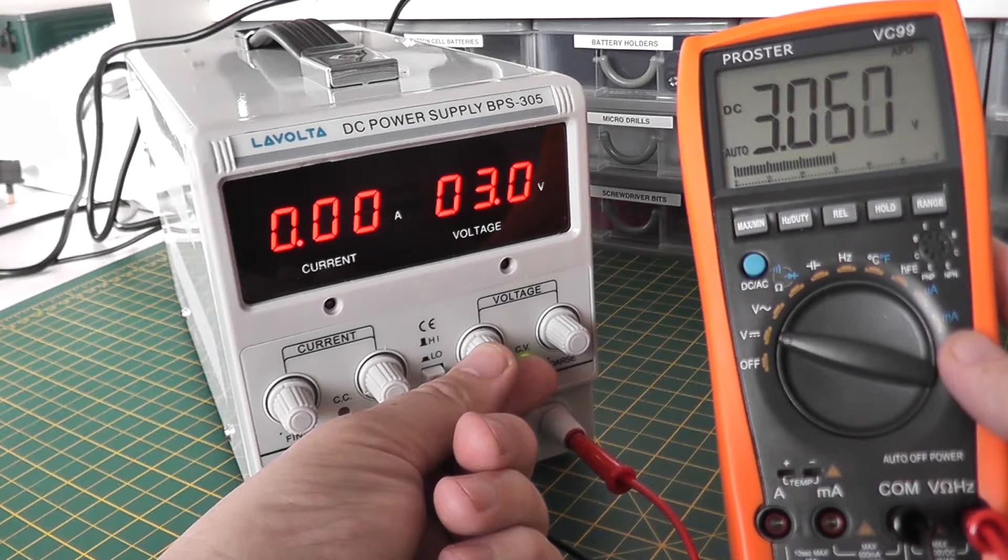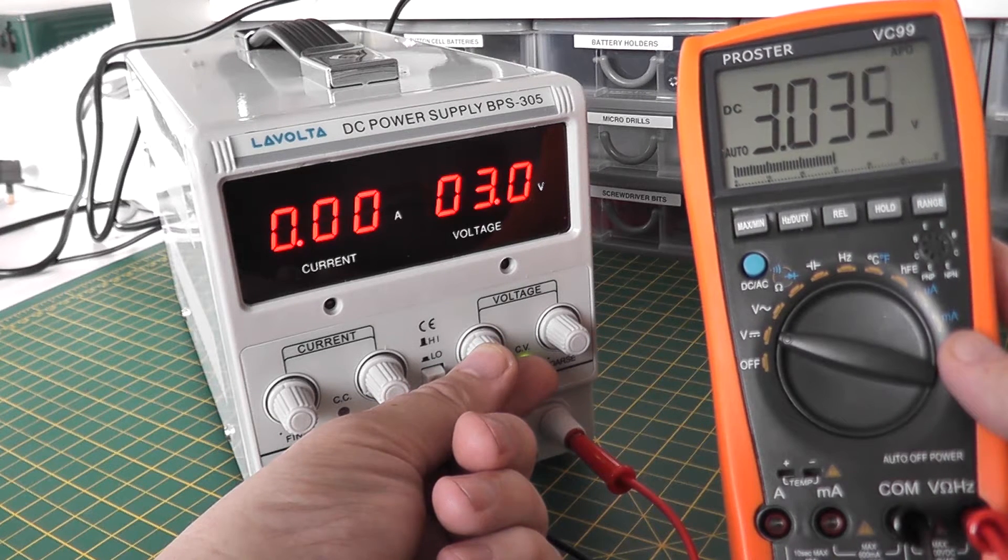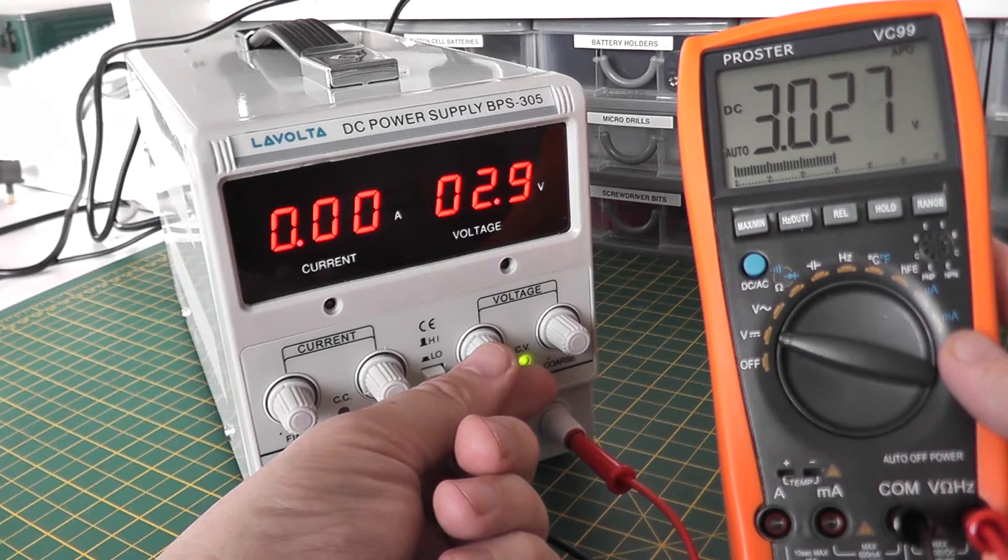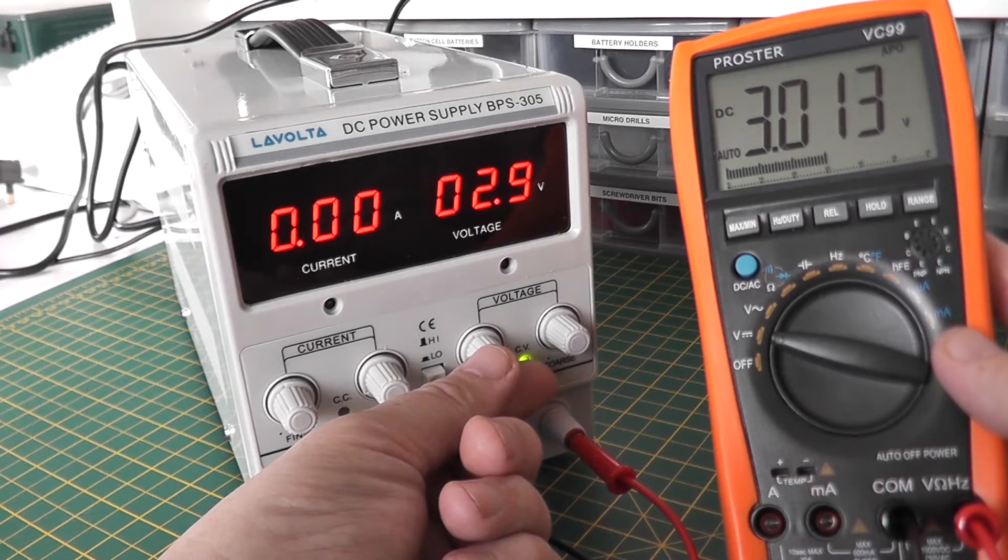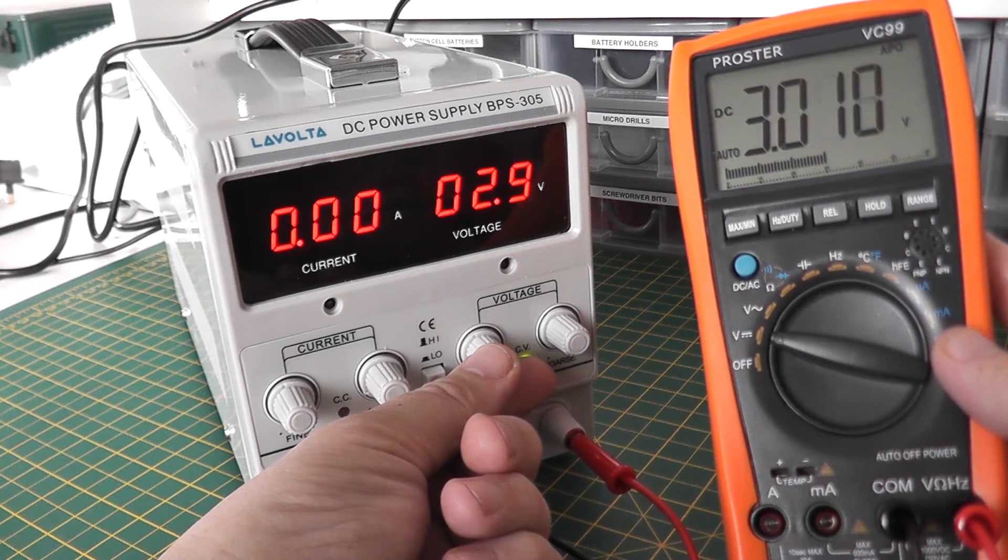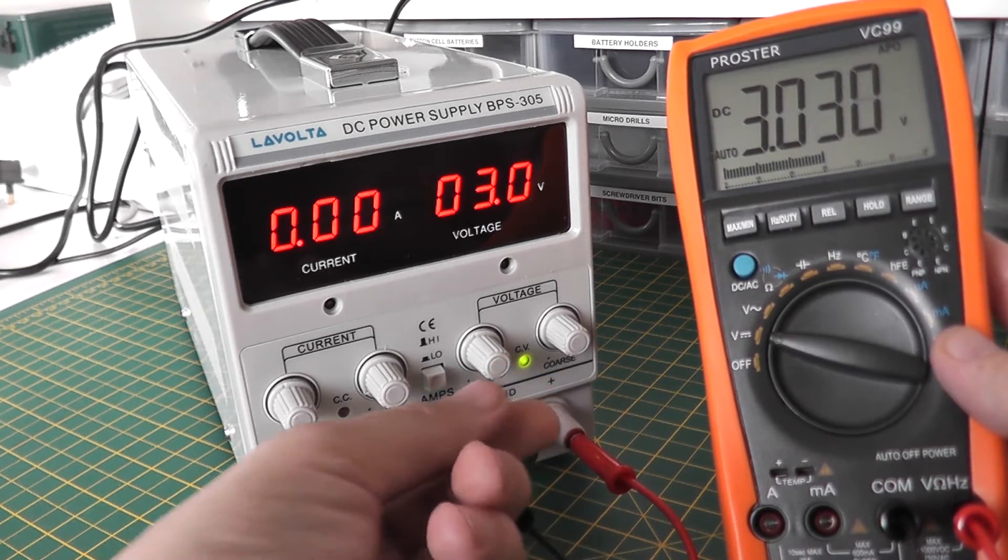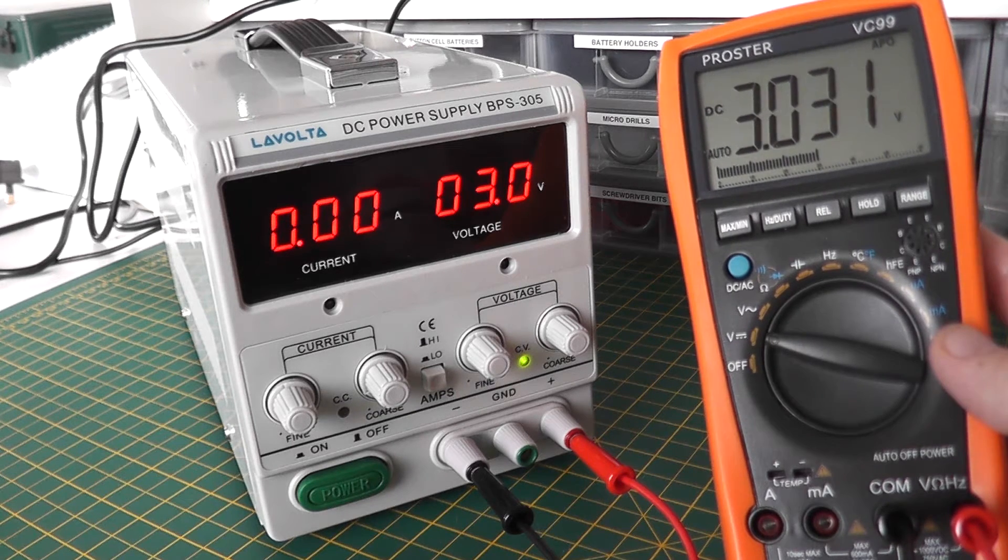Let's see, turning it down, let's see when it drops, there we go. So it's a fraction of a volt but otherwise pretty good, 0.031 out.